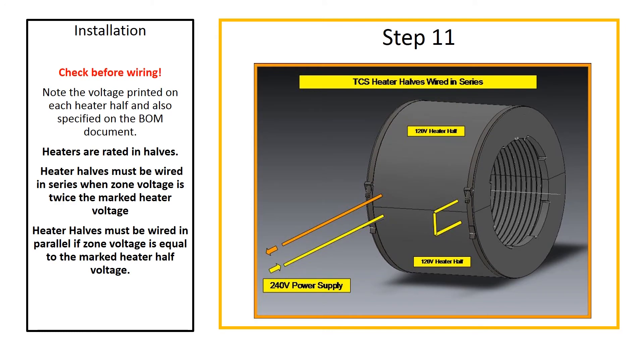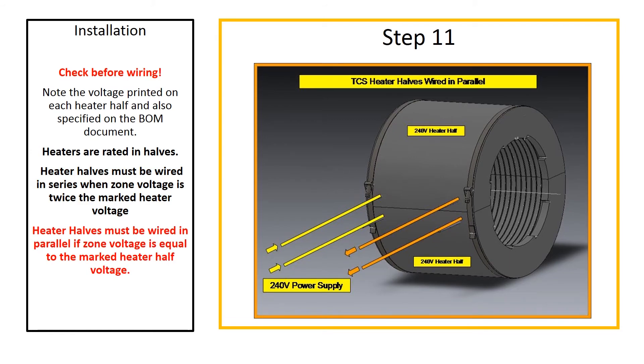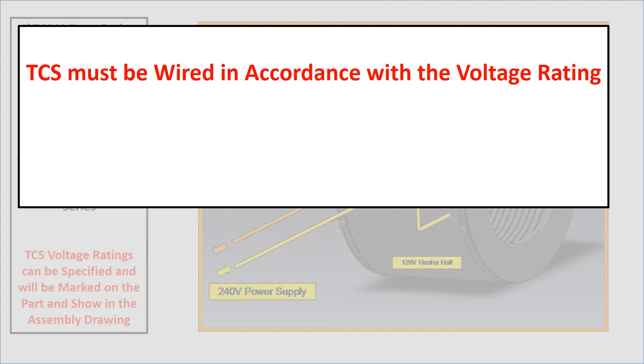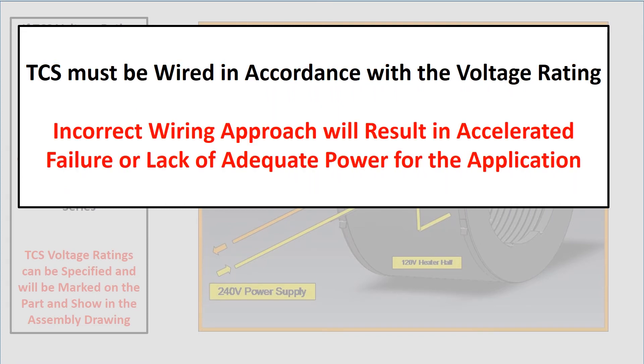Step 11 is associated with the electrical connections and calls out the need to note the voltage printed on each heater half and also specified in the kit drawings to determine if the heater halves must be wired in series, which is the case when the zone voltage is twice that of the marked heater half voltage, or in parallel, which is the case if the zone voltage is equal to the marked heater half voltage. TCS must be wired in accordance with voltage rating. An incorrect wiring approach will result in accelerated failure or a lack of adequate power for the application.